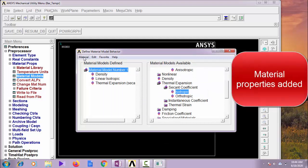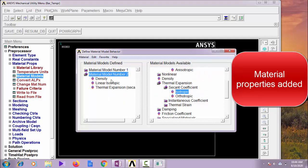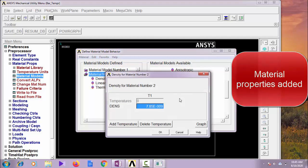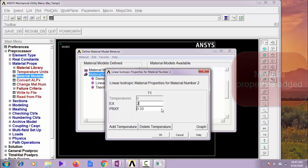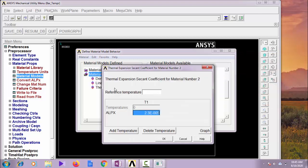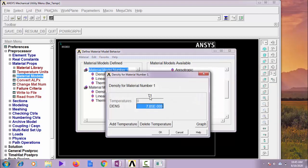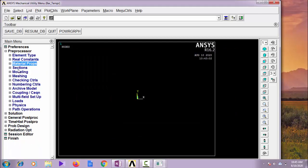And the same material property have been copied here and we can modify this. So the density is 2750. Here it is steel 7850 and 2 x 10^5, 0.3. And thermal expansion 12 x 10^-6. So let me change the material property 1 density. Here it is aluminum 2750 x 10^-12.